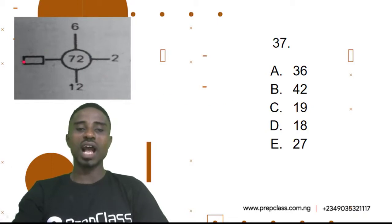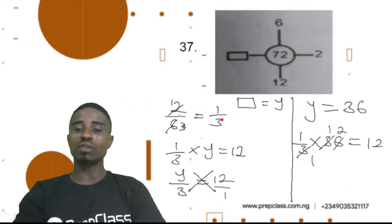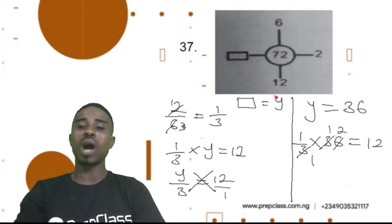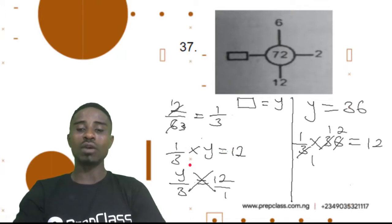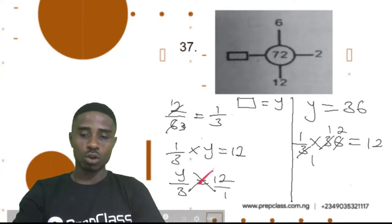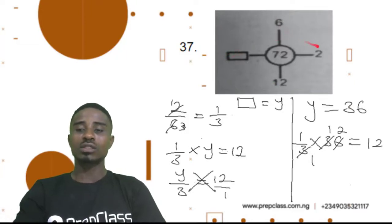Question 37. So, we've been asked to fill up this box. Let's see how to go about it. We'll say 6 over 2 will give us 1 over 3. Then 1 over 3 times this value here should give us 12. But we don't know what the value here is, so let's call it y. So, 1 over 3 times y equals 12, and that gives us y over 3 equals 12. Since this is a fraction, I'll write 12 as 12 over 1. We cross multiply: y times 1 gives me y, and 12 times 3 gives me 36. So, the answer here ought to be 36.